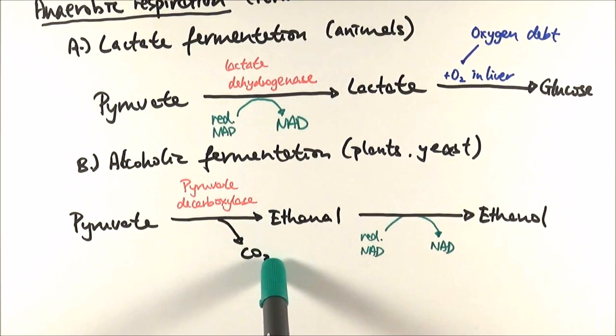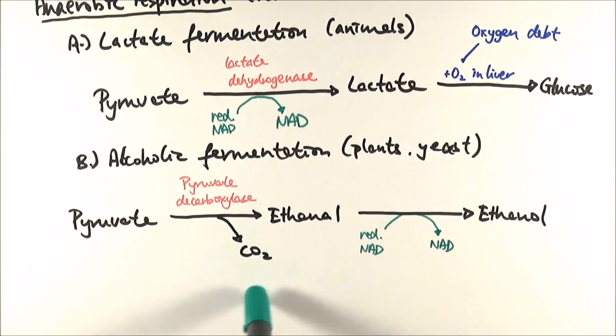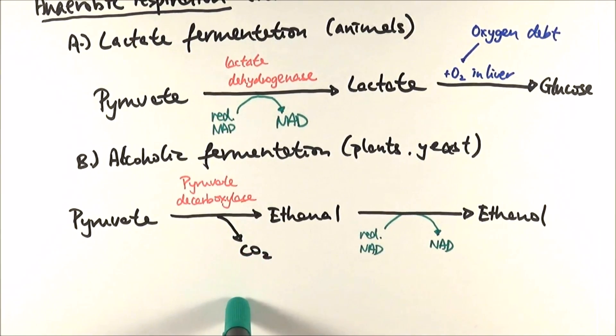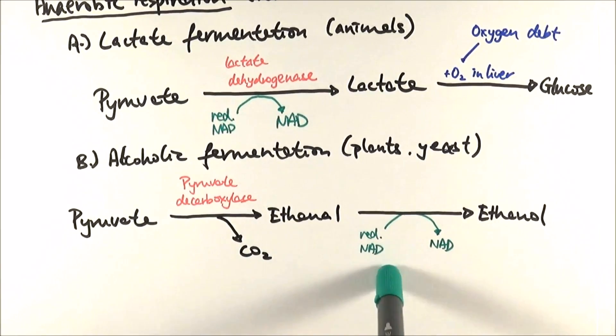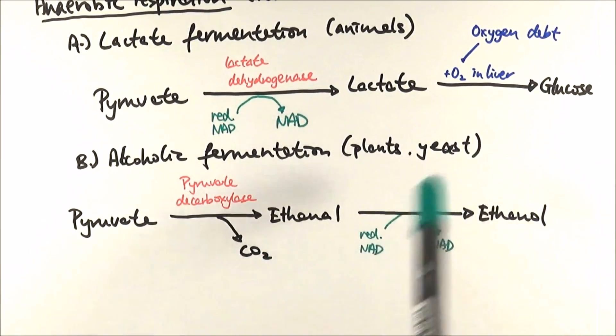And the reason being, when we brew beer, we seal it tight. So the carbon dioxide that was made in this process actually gets dissolved into the liquid, making it fizzy. Whereas in wine, we have a little opening, which allows the carbon dioxide to escape, hence why it's flat.